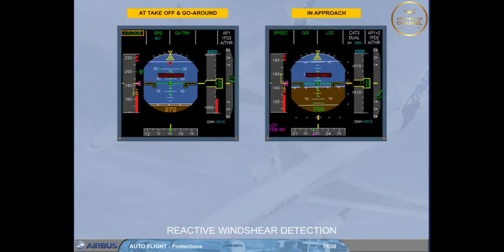The reactive wind shear warning is provided by the FE. The FG provides the following protections against wind shear. At takeoff and go-around, with the autopilot flight director speed reference system vertical mode,